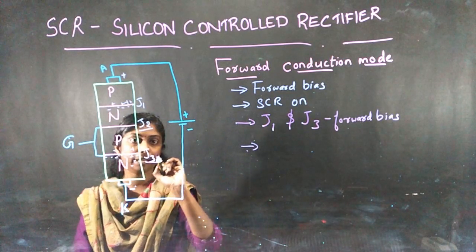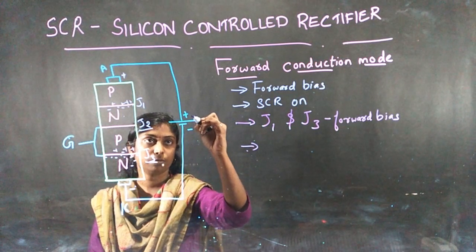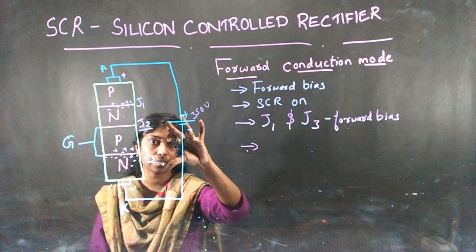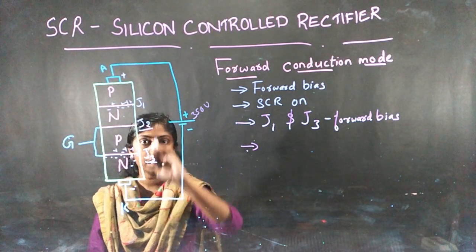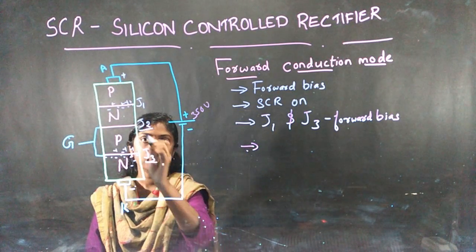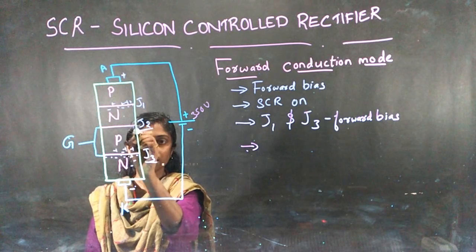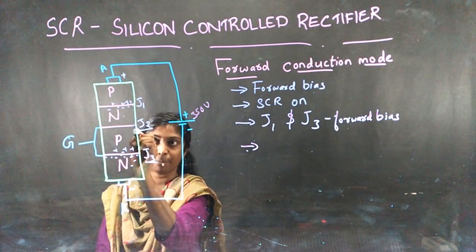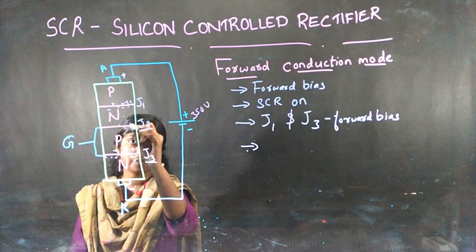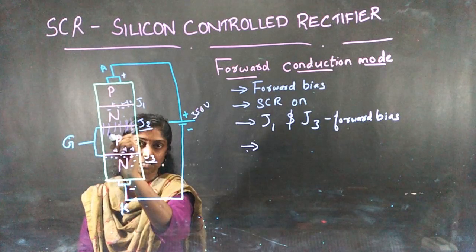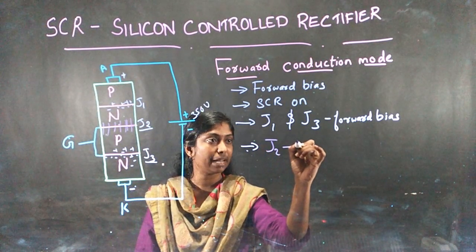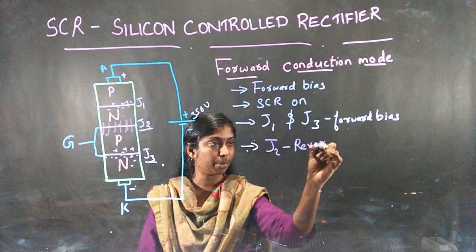Here we are applying high voltage — for example, around 350 volts — across anode and cathode. When we are applying this high voltage, breakdown will happen in the J2 junction. Reverse breakdown will be happening in J2 junction and reverse current will start flowing through the J2 junction. So J2 is reverse biased but reverse breakdown is happening.